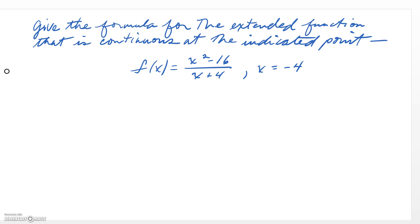Hi AP Calculers, Mr. King here. We're going to look at how you can take a function that has a hole in it, f of x is x squared minus 16 over x plus 4, a rational function, and build an extended function that is continuous at that point.